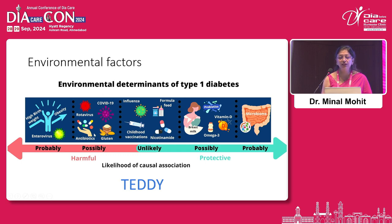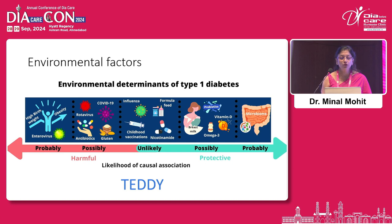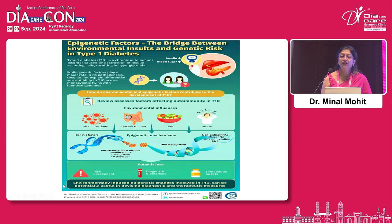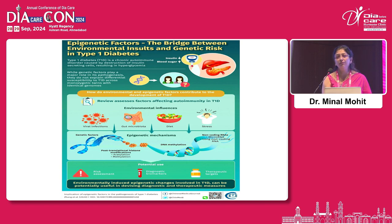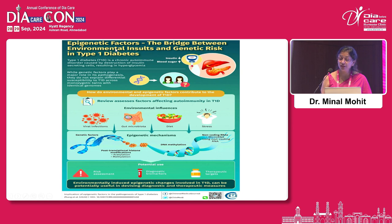Then we have vaccination, and even milk or gluten has been implicated. Various infections have been implicated. So we have environmental triggers. But then what about the same family, same child, same HLA, same environment — still one is having type 1 and another is not? So we have epigenetic factors that become the bridge between the environmental insults and the genetically at-risk children.